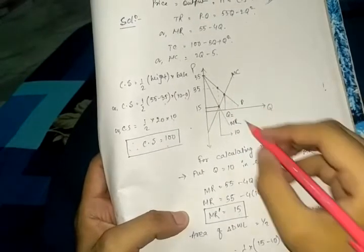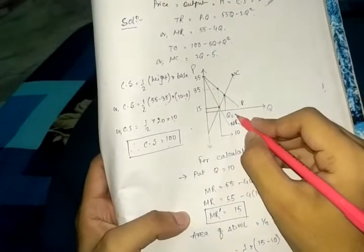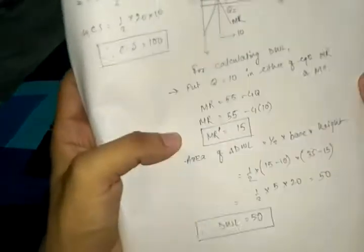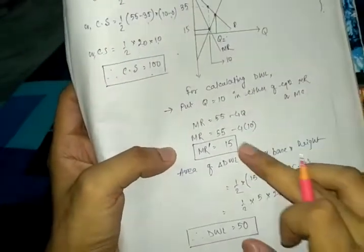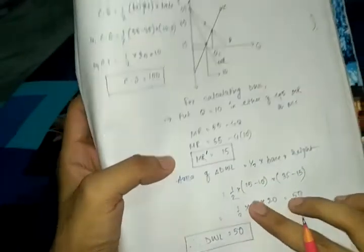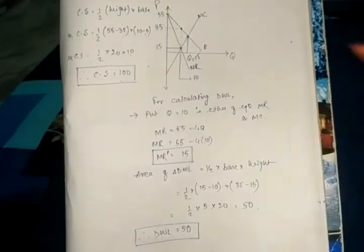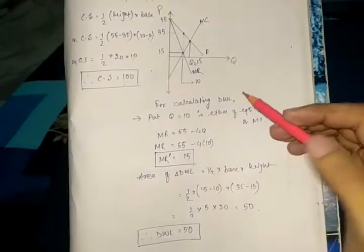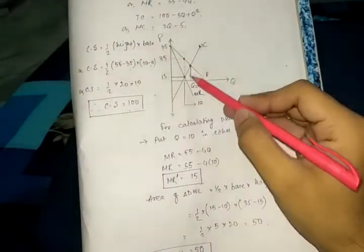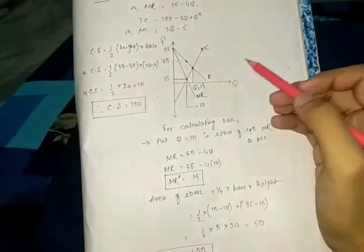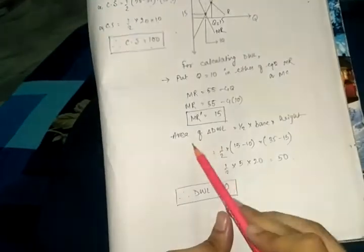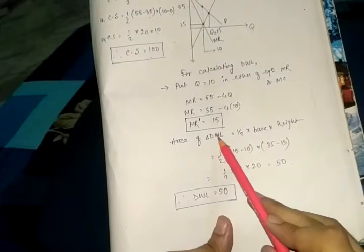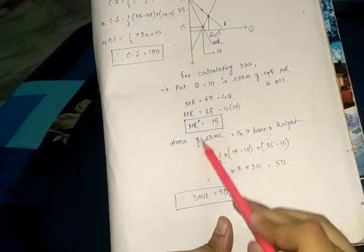At the P = MC intersection, Q = 15. So the base of the DWL triangle runs from Q = 10 to Q = 15. Dead weight loss = half × base × height = half × (15 − 10) × (35 − 15) = half × 5 × 20 = 50. That is the area of the dead weight loss triangle.